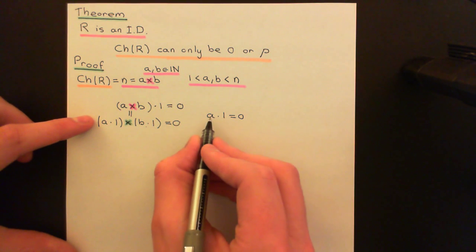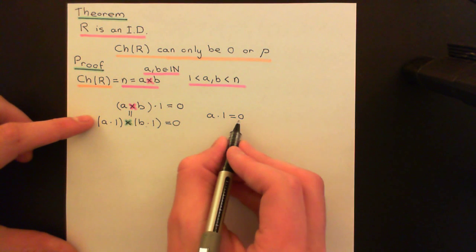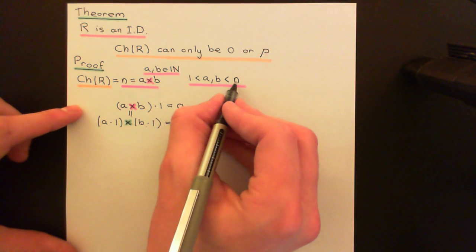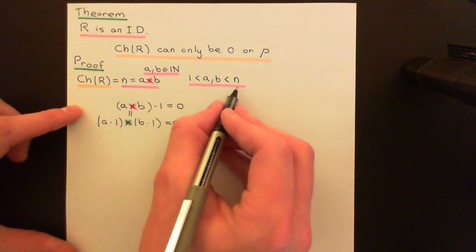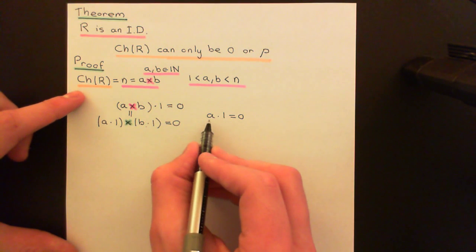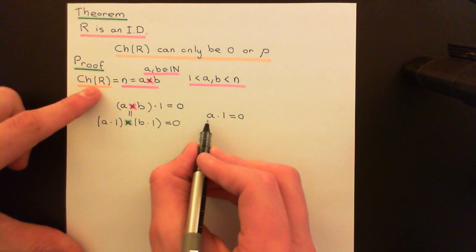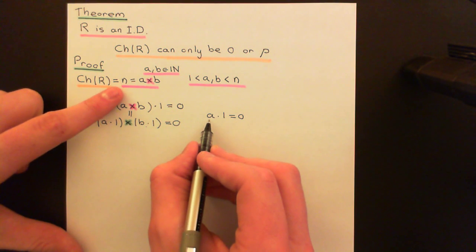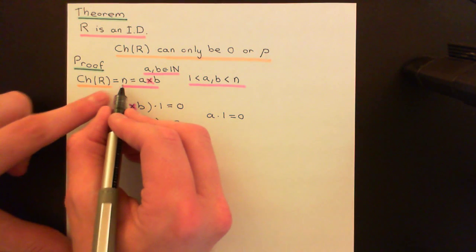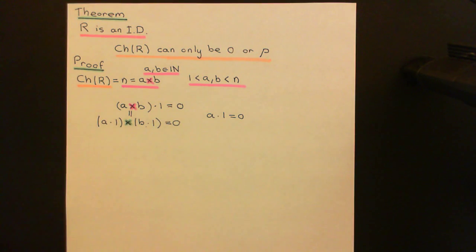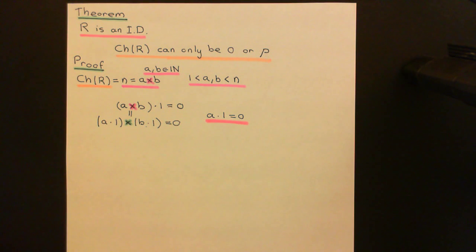But A is strictly less than N, so A would actually be the characteristic of the ring, not N. This is a contradiction, because it contradicts N being the characteristic of the integral domain — A is a better candidate. Therefore, the characteristic of an integral domain cannot be a composite natural number. It can only be either 0 or a prime natural number.